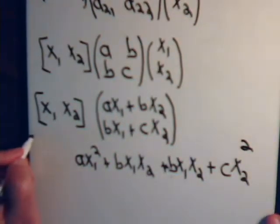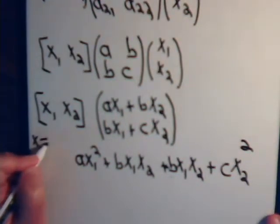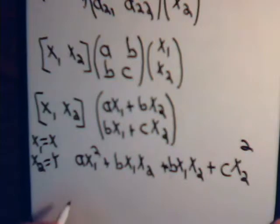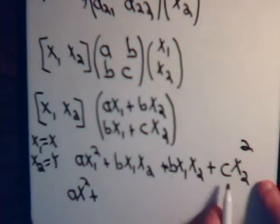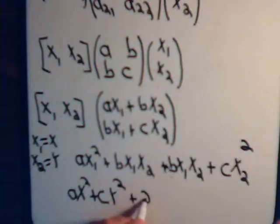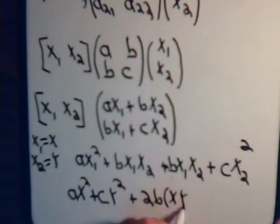Or, as we said before, X1, that's X, X2, that's Y. So, we would have AX squared, plus CY squared, plus 2BXY.